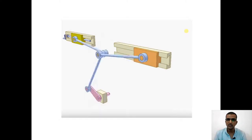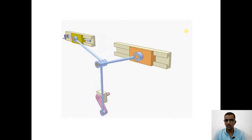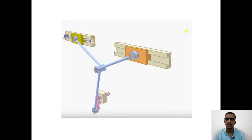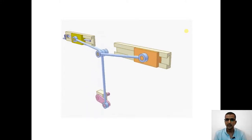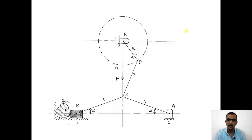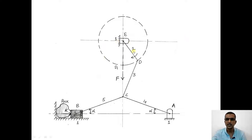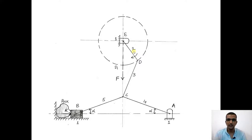Let us go to the construction and understand the working of the toggle mechanism and why we can create an infinite amount of forces at the output. We have link number one which is fixed, connected to link number two which is the crank. The crank is a rotating element which can be connected to a motor. The motor rotates continuously, which also makes the crank rotate continuously.